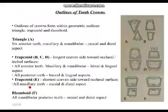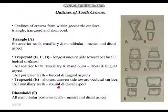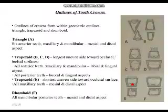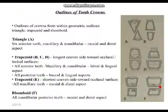With the shortest uneven side towards the occlusal surface — this is confined to all maxillary posterior teeth from the mesial and distal aspect, with the exception of anterior teeth (which are triangular from the proximal). So: all posterior maxillary teeth from the meso-distal aspect are trapezoid with the shortest uneven side towards the occlusal.